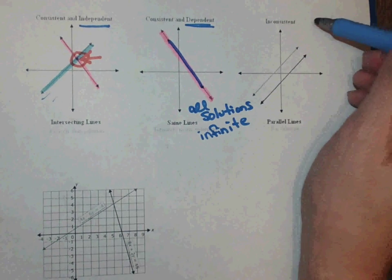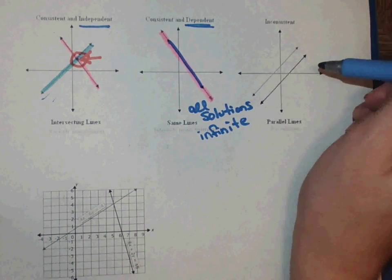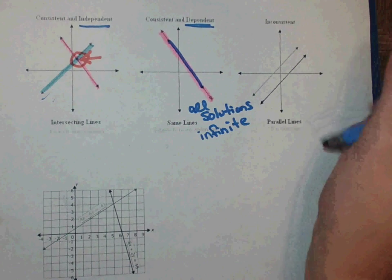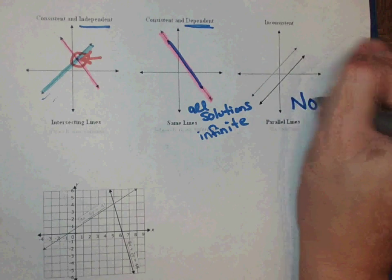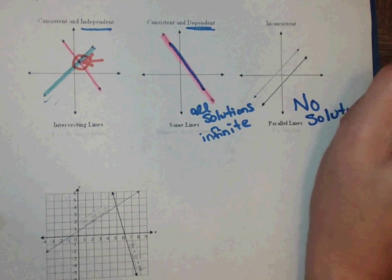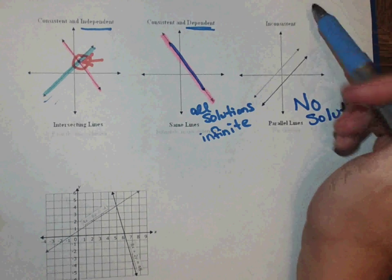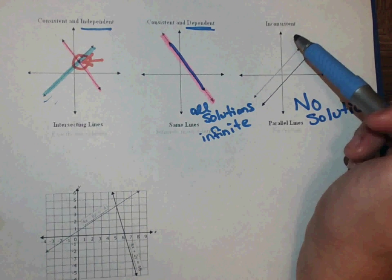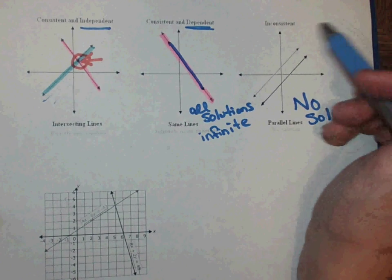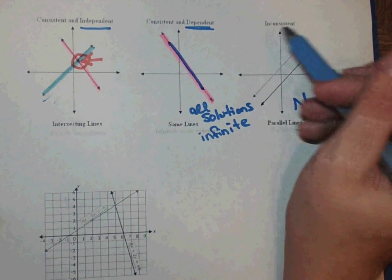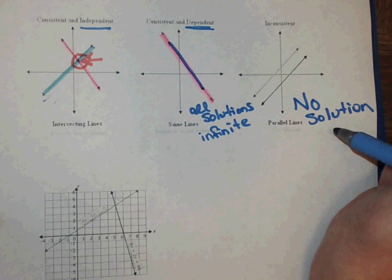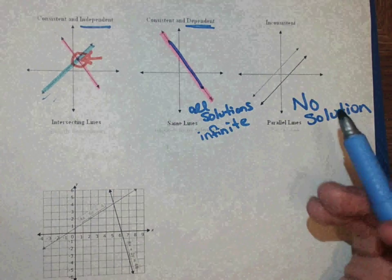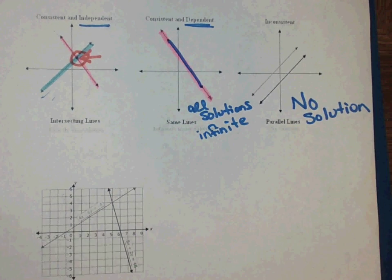Now, we've got this other one over here where you see two parallel lines. These lines never intersect. That means there is no solution. This is when you refer to this line as inconsistent. When you think of incomplete, it's not complete. When you think of inconsistent, it's not consistent. It has no solutions. Remember, consistent means it has a solution. Inconsistent means it has no solution.